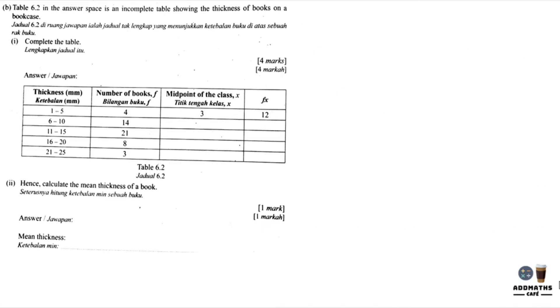For question B, table 6.2 shows an incomplete table. So what you need to do is complete this table. The midpoint is usually the lowest part, which is 6, plus the highest part, 10, divided 2. So 6 plus 10, divided 2, you will get 8.